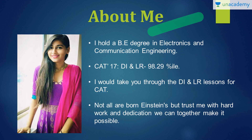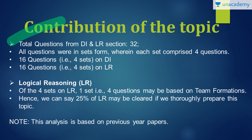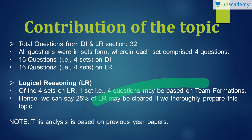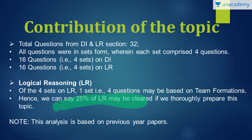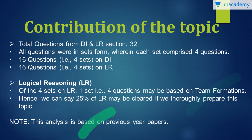Here is a little about me section. I am an electronics and communication engineer and I have scored 98.29 percentile in the DINLR section of CAT 2017. Regarding the contribution of this topic: the DI and LR section together comprises 32 questions, of which 16 questions are on DI and 16 are on LR. Out of the 16 LR questions, they are set as 4 sets with 4 questions each, so one of the sets may be based on team formations. If so, we can end up scoring a complete 100% in the 25% part of logical reasoning if we are thoroughly prepared. This analysis is based on previous years' papers.